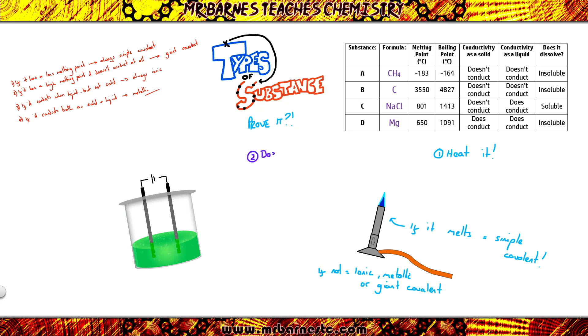If it's ionic, metallic or giant, find out whether it conducts as a solid. So put it into a power pack with a light bulb in. If it conducts and the light bulb lights up, it's either going to be metallic or your exceptions for your giant covalent, which are your graphite, your graphene, your fullerenes, your nanotubes. If it doesn't conduct as a solid, it's going to be either ionic or giant covalent.